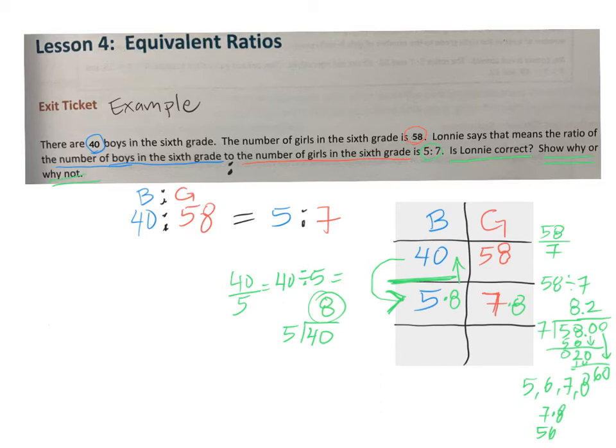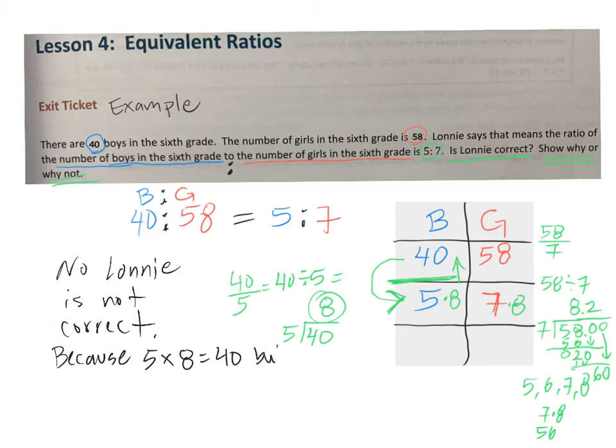And we don't really need to because what we've done is we've already proven that Lonnie is actually not correct. Is Lonnie correct for this particular set of numbers? No. Lonnie is not correct. Because 5 times 8 equals 40, but 7 times 8 equals 56, not 58. And that's really what we are showing here.